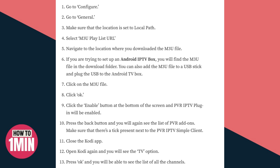After you have subscribed to an IPTV service and downloaded the M3U file, you need to click on Configure, go to General, and make sure that the location is set to local path. Select M3U playlist URL and navigate to the location where you downloaded the M3U file. If you are setting up an Android IPTV box, you will find the M3U file in the download folder.